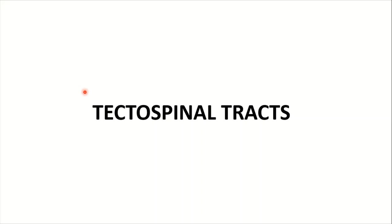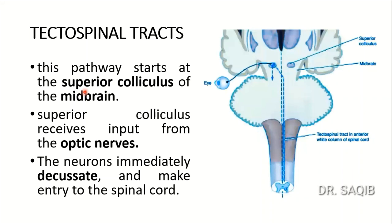The tectospinal tract starts at the superior colliculus of the midbrain — part of the corpora quadrigemina. The superior colliculus receives input from the optic nerve, as explained in the midbrain lecture. These neurons immediately decussate, crossing to the opposite side.